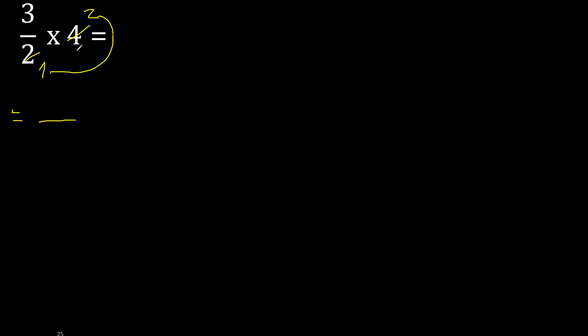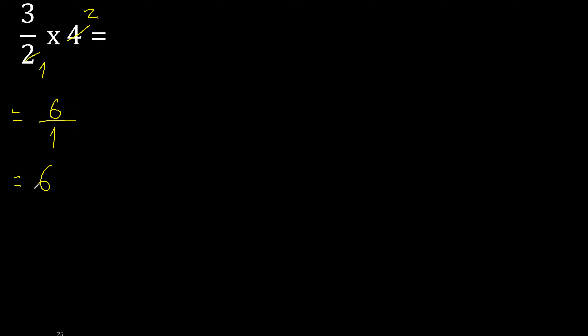Cannot be simplified. Multiply: 3 multiplied by 2 is 6, and 1 stays as 1. 6 divided by 1 is 6.